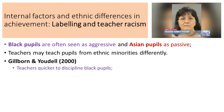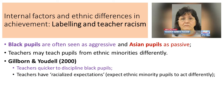Looking at a particular piece of work by Gilbon and Udall in the year 2000, they found teachers were quicker to discipline black pupils. Teachers had racialized expectations - that is, they expected ethnic minority pupils to act differently - so when teachers entered the classroom and saw students from a black Asian minority ethnic background, they had a racialized expectation of what they could achieve and how they were going to behave in the lesson.